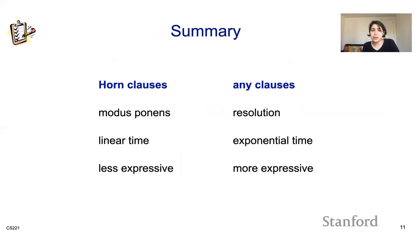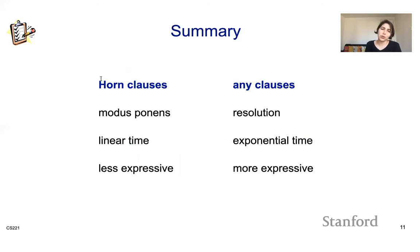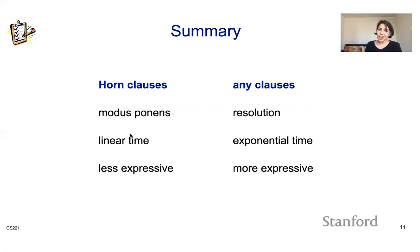It's not surprising that resolution takes exponential time — it's actually trying to solve a satisfiability problem. You're doing model checking, and satisfiability is known to be NP-complete. So there are real trade-offs here: horn clauses with modus ponens runs in linear time but is less expressive; resolution handles all of propositional logic but solves an NP-complete problem and takes exponential time.